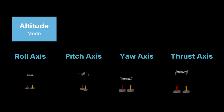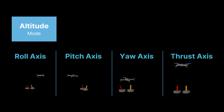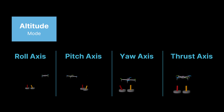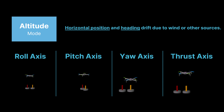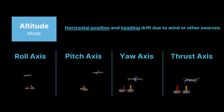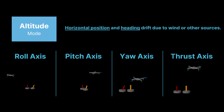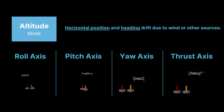Please note that in altitude mode, the drone may drift horizontally due to wind or other sources, as the autopilot only stabilizes the roll, pitch, and yaw while maintaining altitude, but does not control horizontal position and heading.